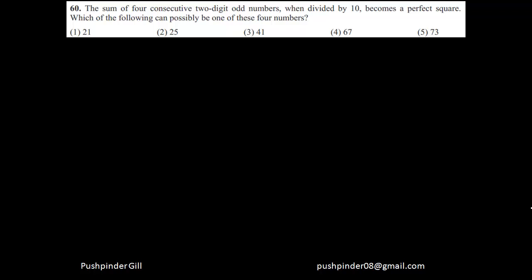Now there are two ways you can do these type of questions. Either you go by the algebra — you assume one of the numbers is x, then the next number would be x plus 2, then x plus 4. But that will not give you the answer, because he's asking which of the options can possibly be one of the four numbers, and you don't have an exact equation giving you the answer straight away.